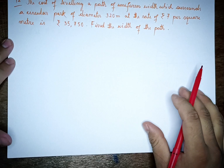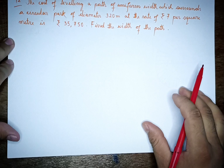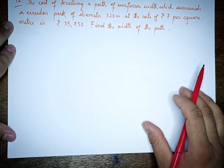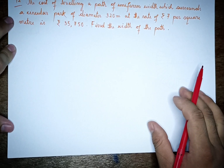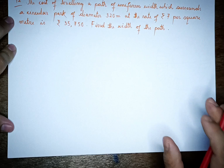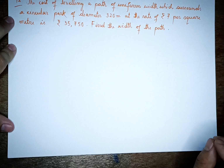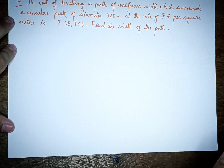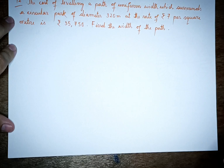The next question is the 12th question. The cost of leveling a path of uniform width which surrounds a circular park of diameter 320 meters, at the rate of Rs. 7 per square meter, is Rs. 35,750. Find the width of the path.